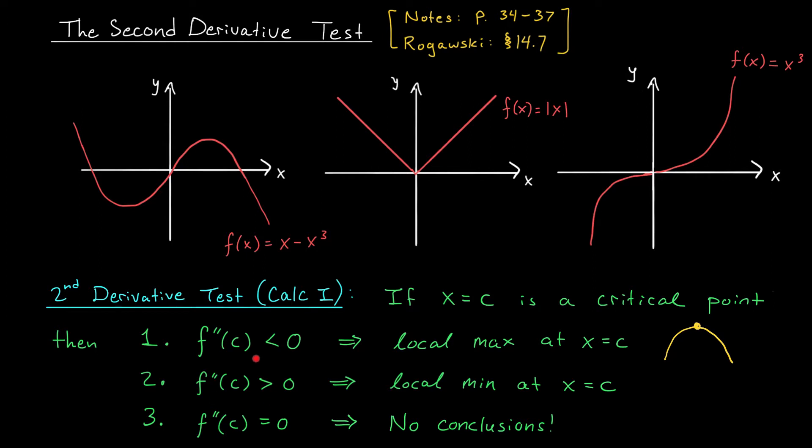If instead your second derivative is positive, well then you have a local minimum at x equals c. After all, a positive second derivative means your function is concave up, and sure enough, there's our local min.